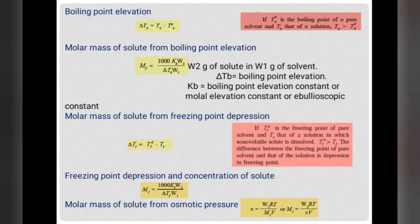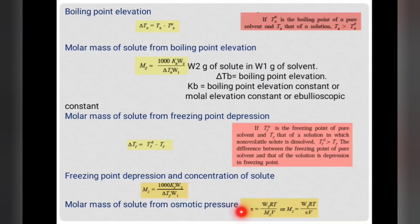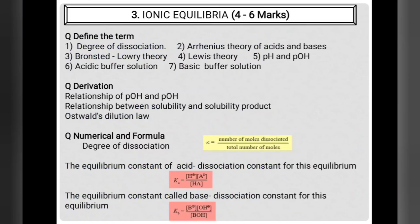For freezing point depression, the molar mass formula is: M₂ = (1000 × Kf × w₂) / (ΔTf × w₁), where ΔTf = T⁰f − Tf. T⁰f is the freezing point of pure solvent and Tf is the freezing point of solution. From osmotic pressure, π = w₂RT / (M₂V), from which molar mass can be calculated. These are the important formulas and derivations from the solutions topic.